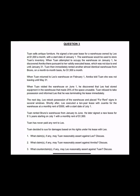We are on to question three from the February 2023 bar exam. This was the last question on Tuesday morning. I see three calls. Call one: what claims, if any, may Tuan reasonably assert against Leo? That is pretty much a dead giveaway. On the California Bar, the tradition is that if you see a T name and an L name, we're talking about landlord and tenant, and we're in the area of property law.